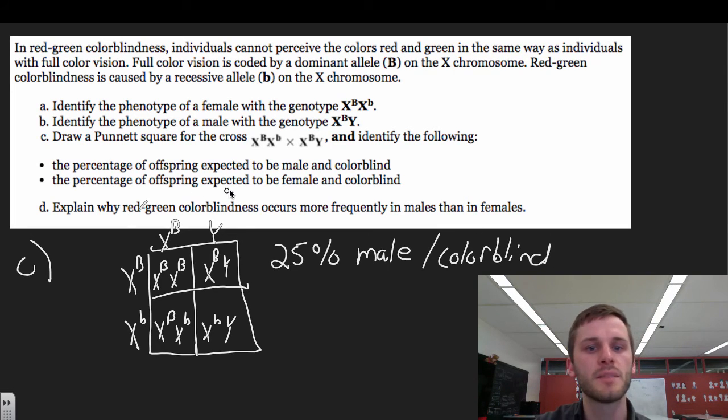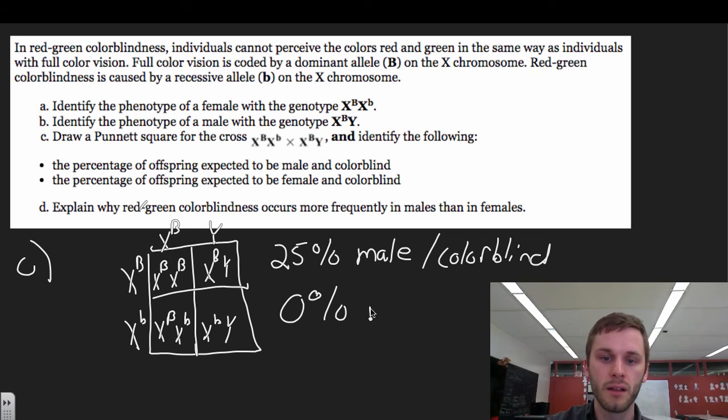And the percentage of offspring expected to be female and colorblind. Well, only 50% are females over here. So we have this. Both of these have the dominant trait. And this one right here, this woman has a dominant and a recessive, but the dominant still takes hold. So actually, there's 0% female and colorblind.